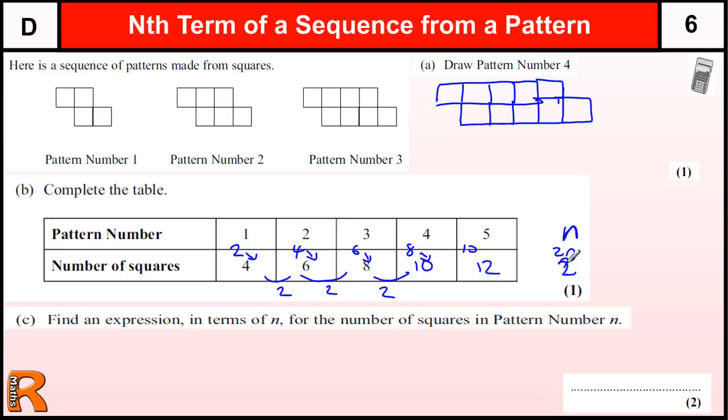So this is my two times table, because that's the 2n, plus an extra two. And if I wanted to work out the sixth one, I would times by two and add two. So it would be six times two is 12, plus two is 14. And that would fit nicely onto my sequence. So that's going to be 2n plus 2.